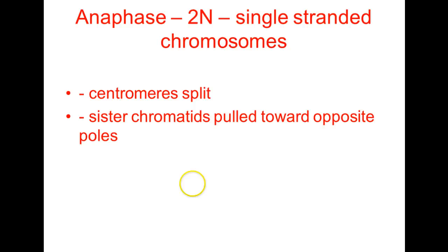During anaphase, the cells are diploid but the chromosomes are now single-stranded. Diploid versus haploid has nothing to do with single- or double-stranded chromosomes — it has to do with whether we have homologous chromosomes in the same cell, a copy from dad and a copy from mom. During anaphase, centromeres are going to split and sister chromatids will be pulled towards opposite ends of the cell.